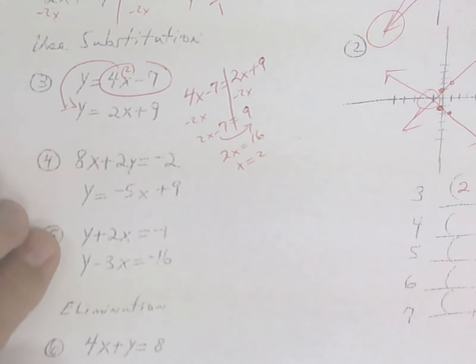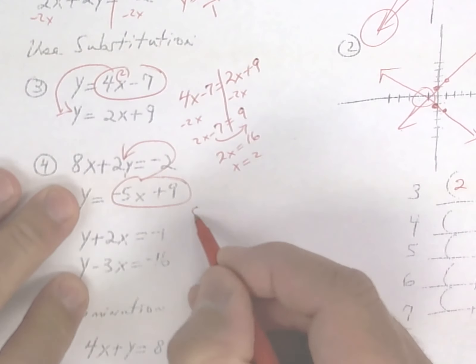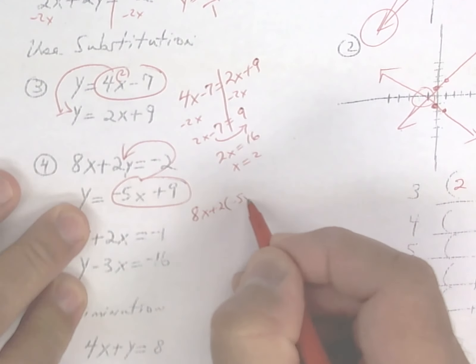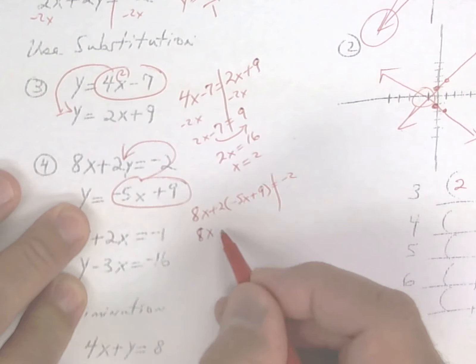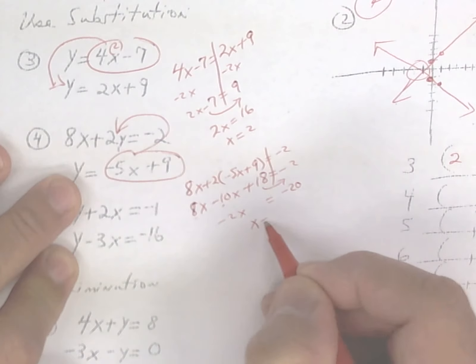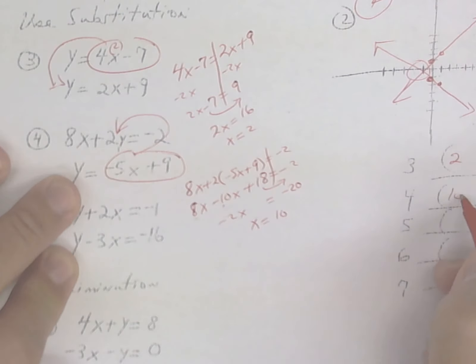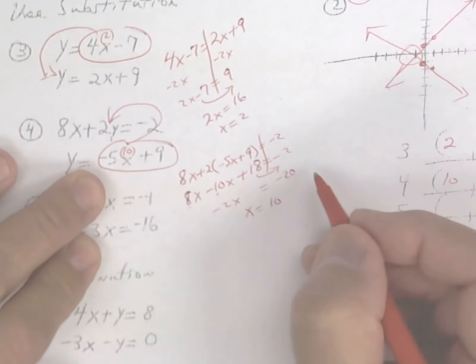On the next one, you're going to do substitution as well. So you're going to take all of this and put it in place of the y. It's going to be a negative 2x. You're going to bring the 18 over there, that becomes a negative 20, because 18 becomes a negative. Divide by negative 2 and you get 10, so x equals 10. Come on right here and put a 10. So you get negative 5 times 10 is negative 50, plus 9 is a negative 41.